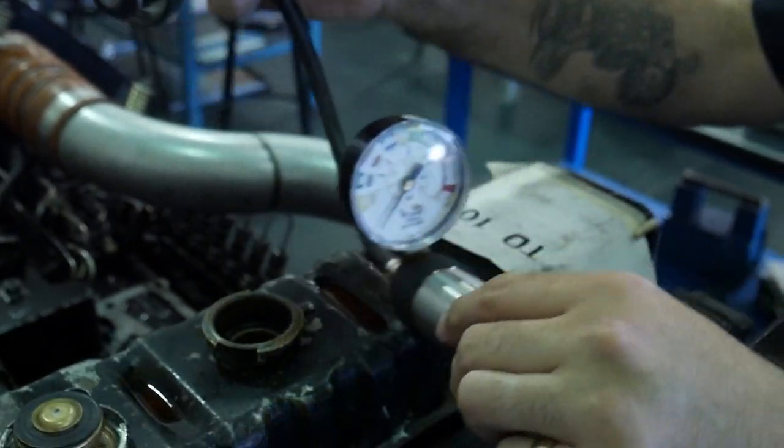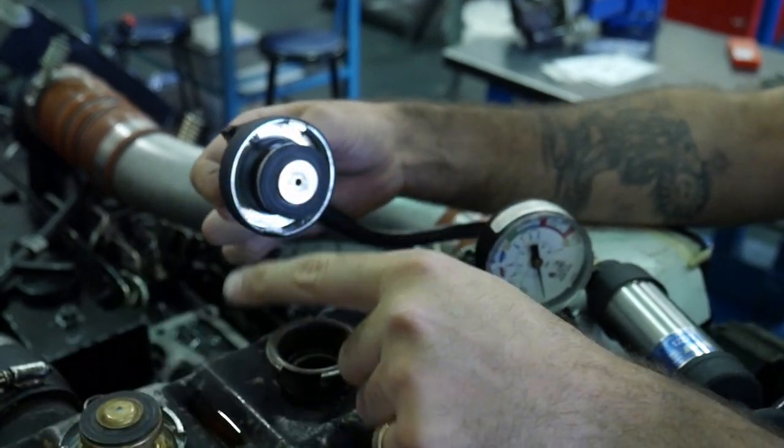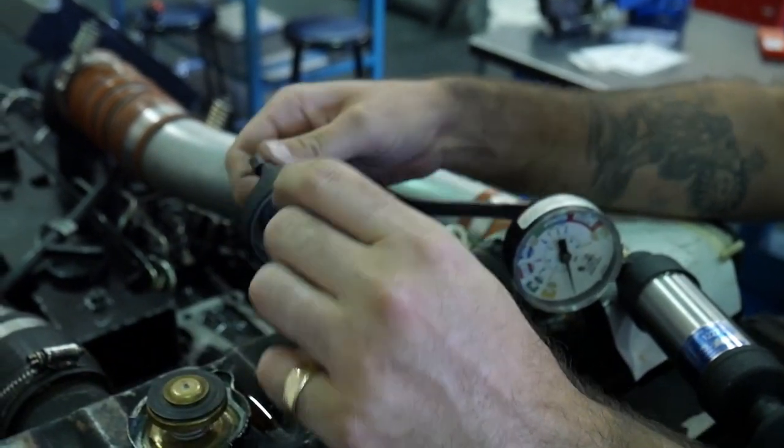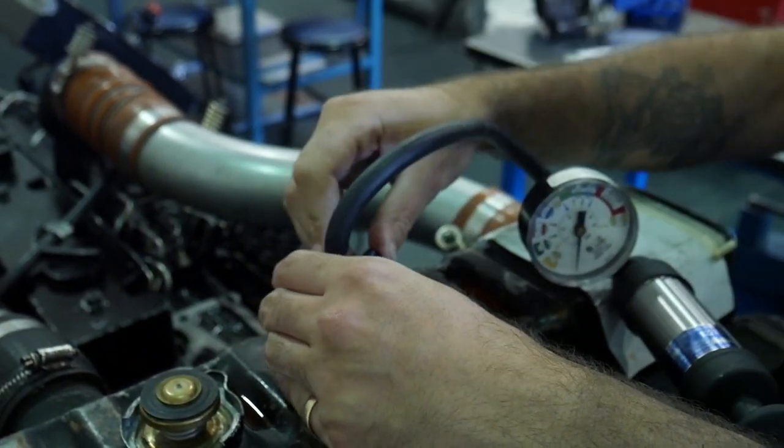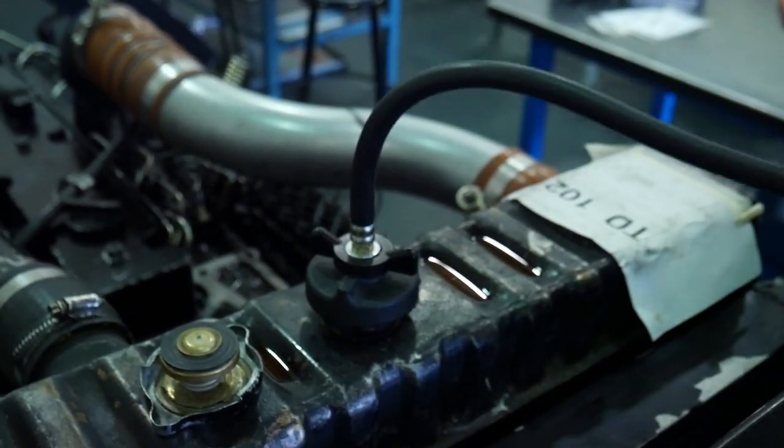Now we'll take our coolant pressure tester and install it. It's the same mechanism as the cap itself, so you have two tangs that have to go in the right position. You'll have to push down and go to the second stage of the click to get there. So it's nice and tight—it's going to hold pressure.